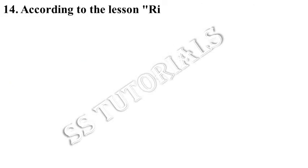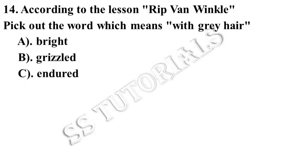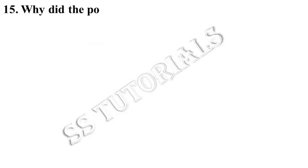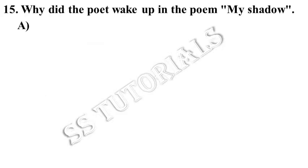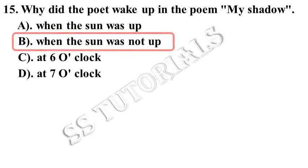According to the lesson 'Rip Van Winkle', pick out the word which means 'with grey hair'. Answer: Grizzled. Why did the poet wake up in the poem 'My Shadow'? Answer: When the sun was not up.